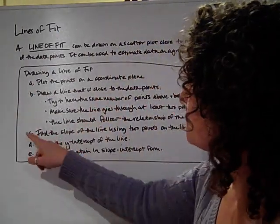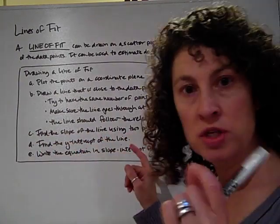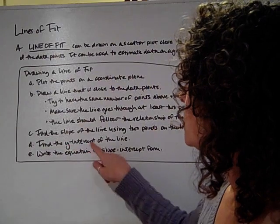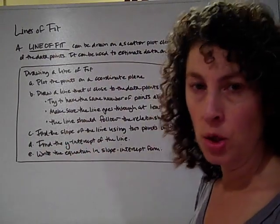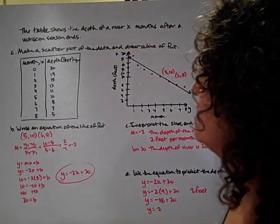So after we've drawn our line, we're going to find the slope of the line using the two points on that line. We're going to find the y-intercept of the line and then we're going to write an equation in slope-intercept form. So let's actually do this with a set of data.